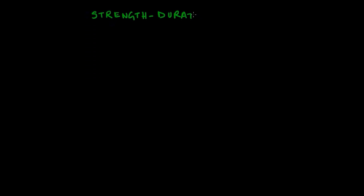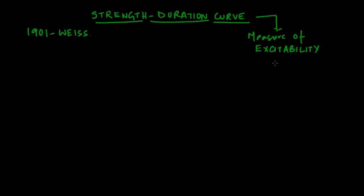To answer this question, we need to know about the strength-duration curve, which was first proposed by neurophysiologist Weiss in 1901. The strength-duration curve measures the excitability of tissues in our body, particularly nerve tissue resulting in action potentials and muscle stimulation resulting in contraction.